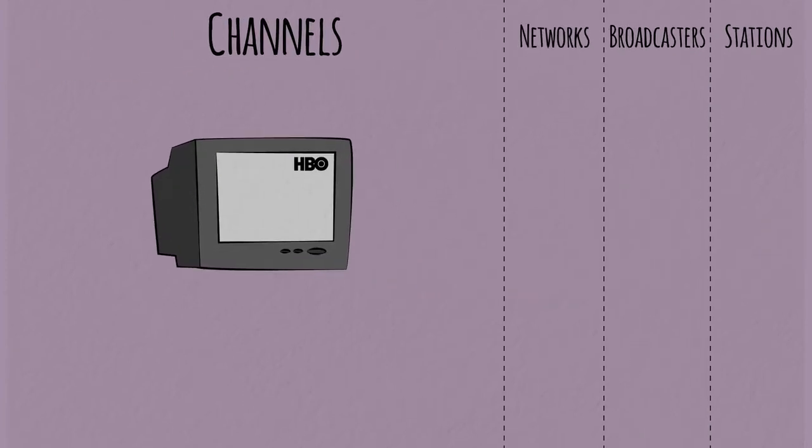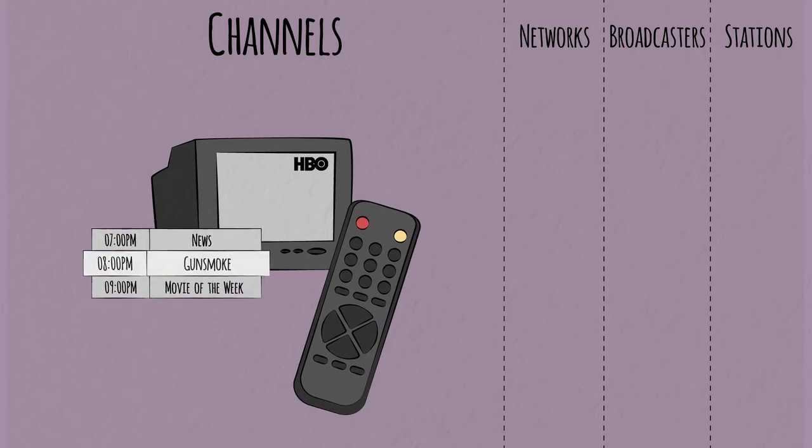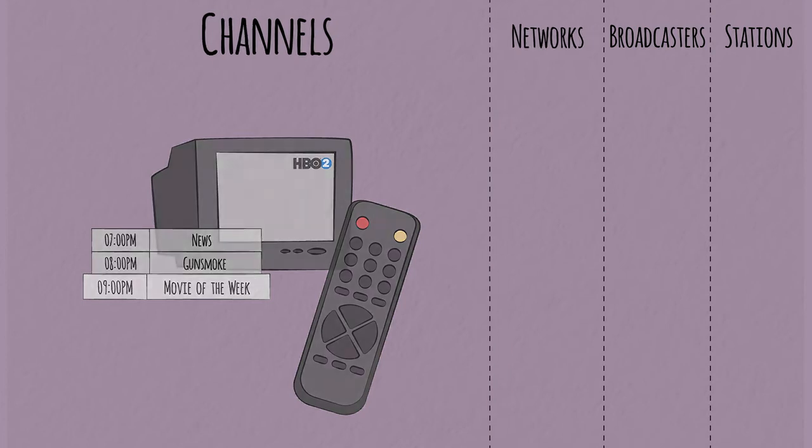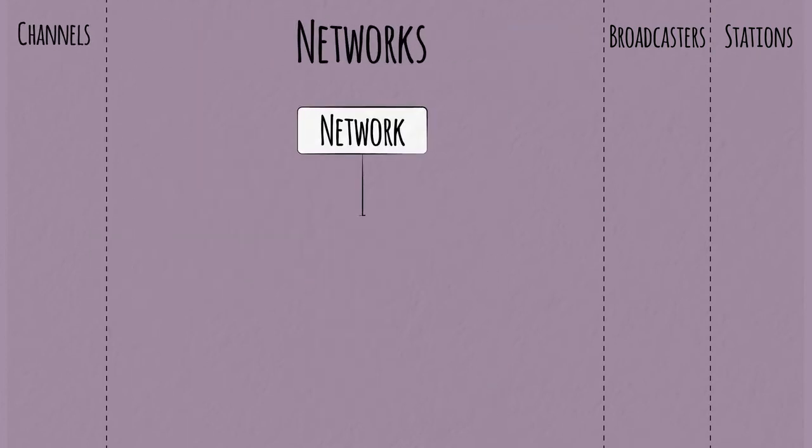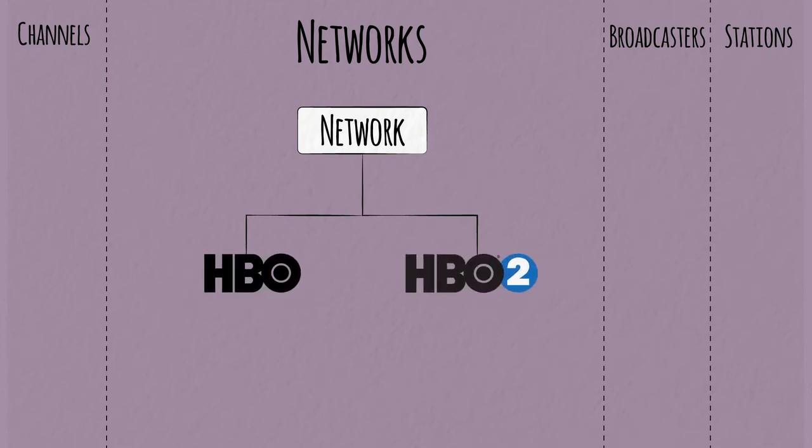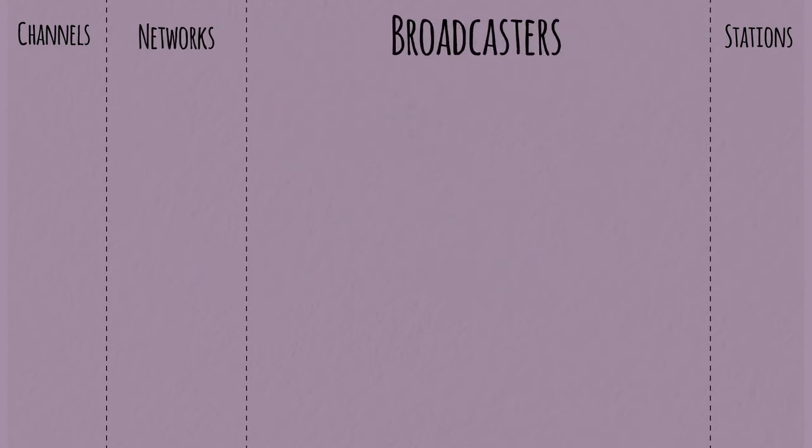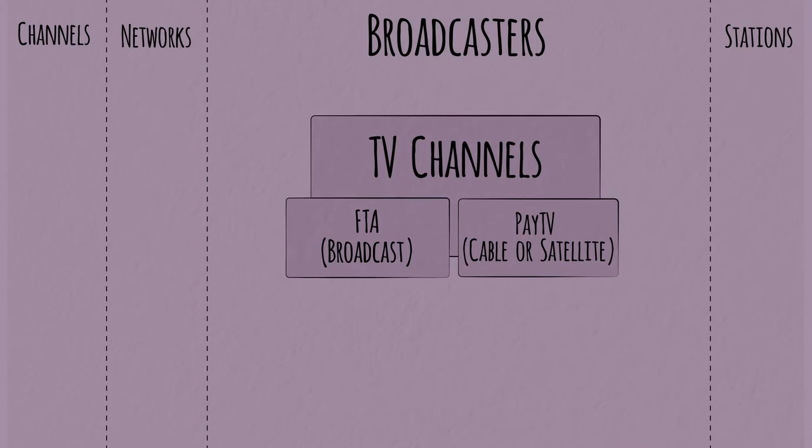A channel is what you select when you press a button on your remote. It's a single menu of linear programming, like HBO or HBO2. A network is a central operation that provides programming for multiple regional or national channels. HBO and HBO2 are owned by parent company HBO, Inc., which is a network.